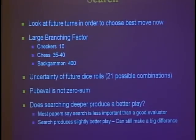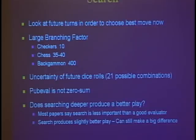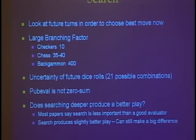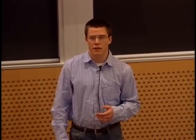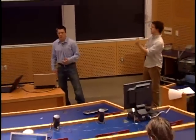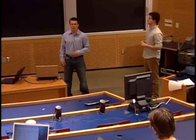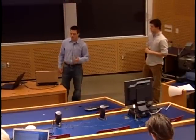Our next goal was to implement a search that looks into the future to help choose the best move. One challenge is that the branching factor is very large because you don't know what future dice rolls will be. In checkers the branching factor is 10, in chess it's 35 to 40, but in backgammon it's around 400 per turn. Another challenge is that the POVAL function we use is not zero-sum, which created additional difficulties. Most papers say the board evaluator is more important than searching deeper, but searching into the future does improve play — especially at high levels where a slight performance increase can make a big difference.